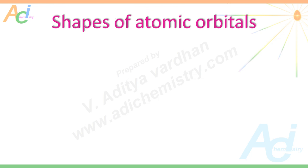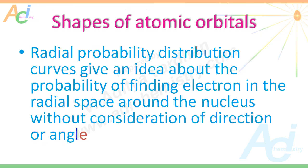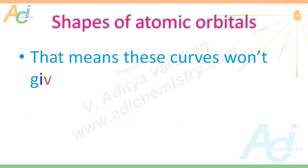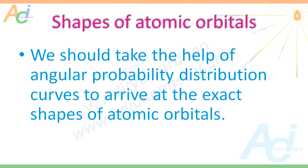Now, the question is: is it possible to get the shapes of atomic orbitals from the radial probability distribution curves? These curves give an idea about the probability of finding the electron in the radial space around the nucleus without consideration of direction or angle. That means these curves won't give an idea about the shapes of atomic orbitals. We should take the help of angular probability distribution curves to arrive at the exact shapes of atomic orbitals.